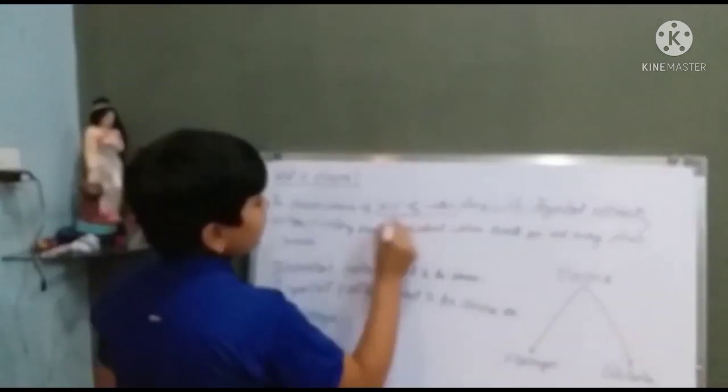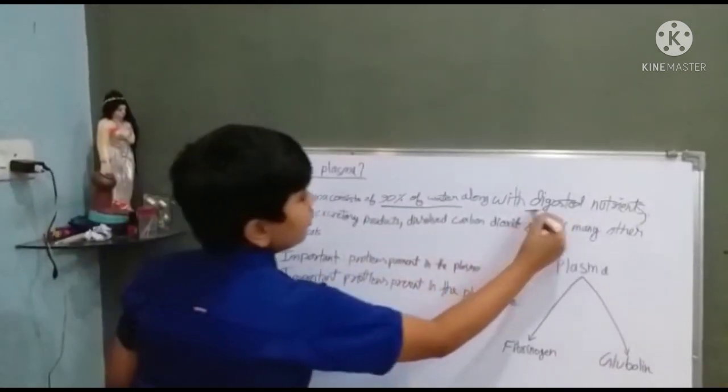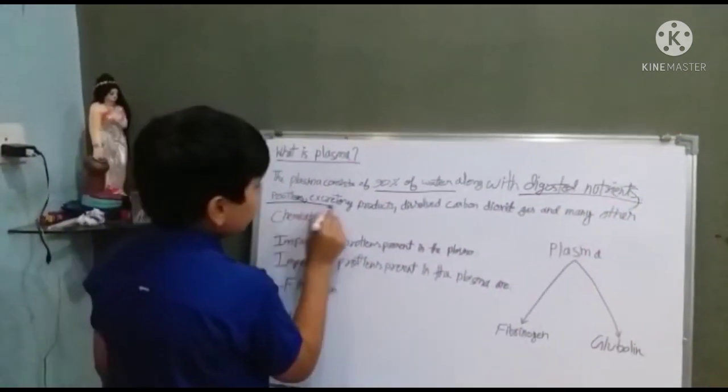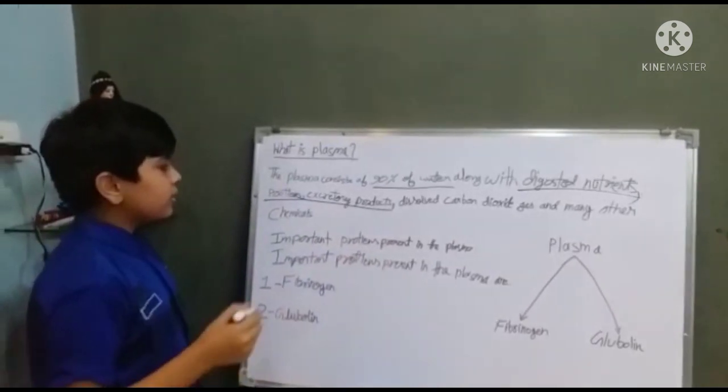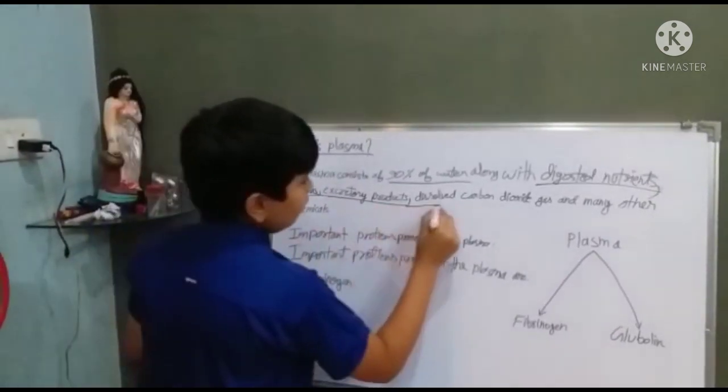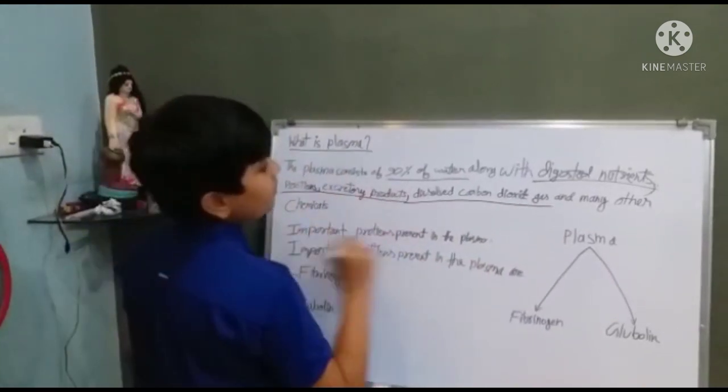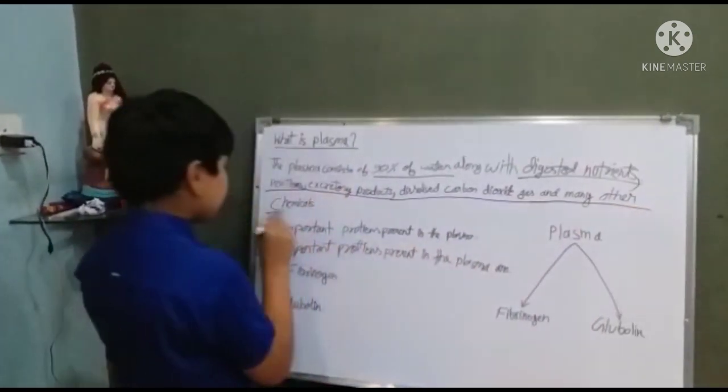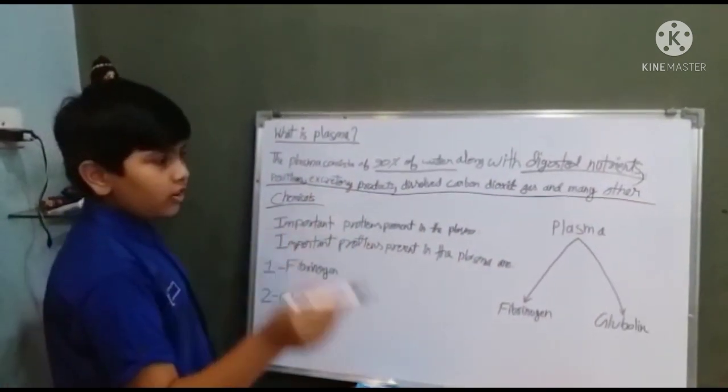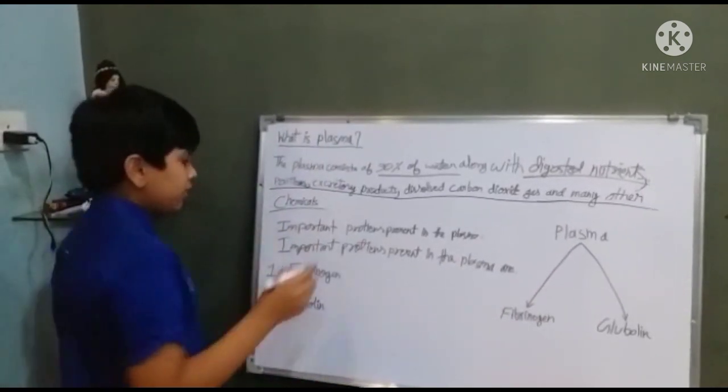Plasma consists of 90% water along with digested nutrients, proteins, and excreted products. Excreted products means human waste, dissolved carbon dioxide gas, and many other chemicals.